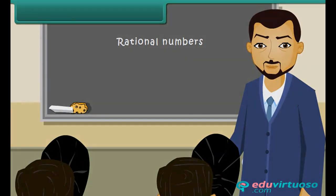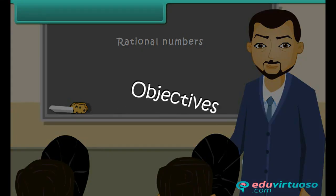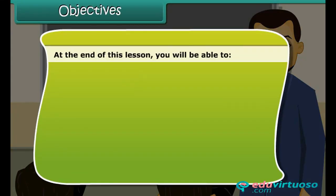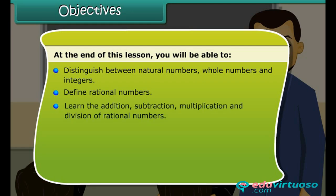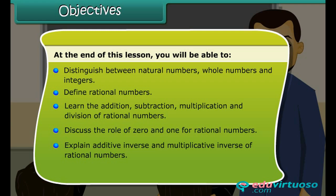Lesson objectives: at the end of this lesson, you'll be able to distinguish between natural numbers, whole numbers, and integers; define rational numbers; learn the addition, subtraction, multiplication, and division of rational numbers; discuss the role of zero and one for rational numbers; explain additive inverse and multiplicative inverse of rational numbers.